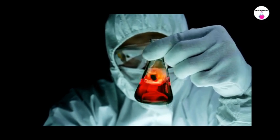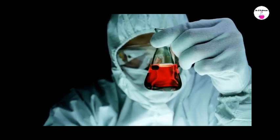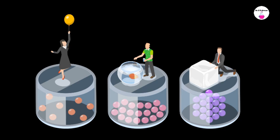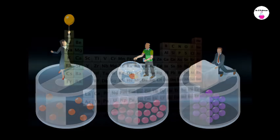These properties are related to the substance's ability to change its composition. States of Matter: Matter can exist in three primary states - solid, liquid, and gas. Each state has distinct characteristics based on how closely the particles are packed and how they move.